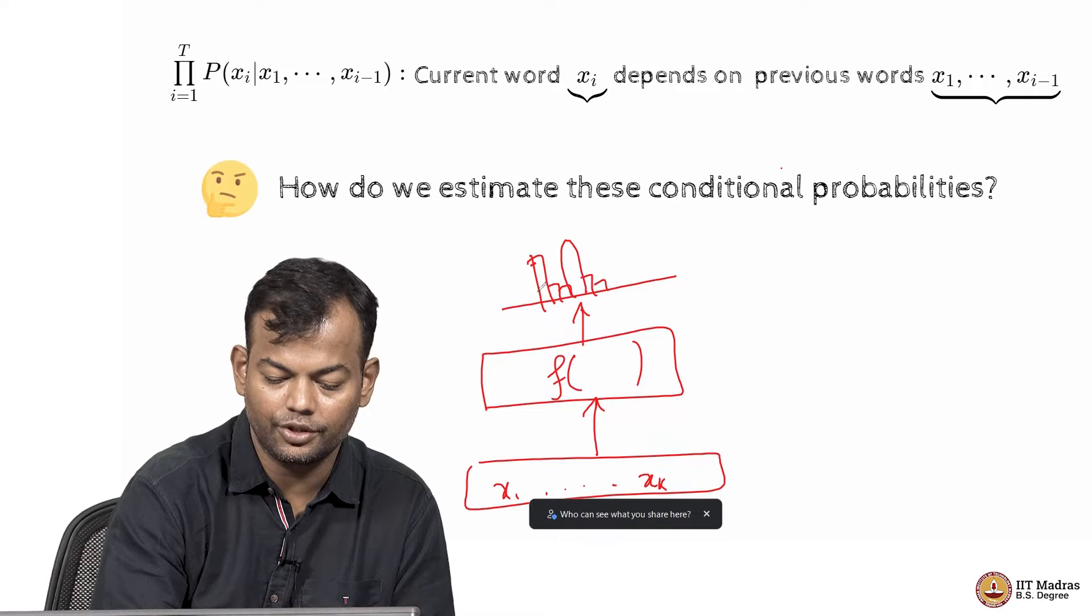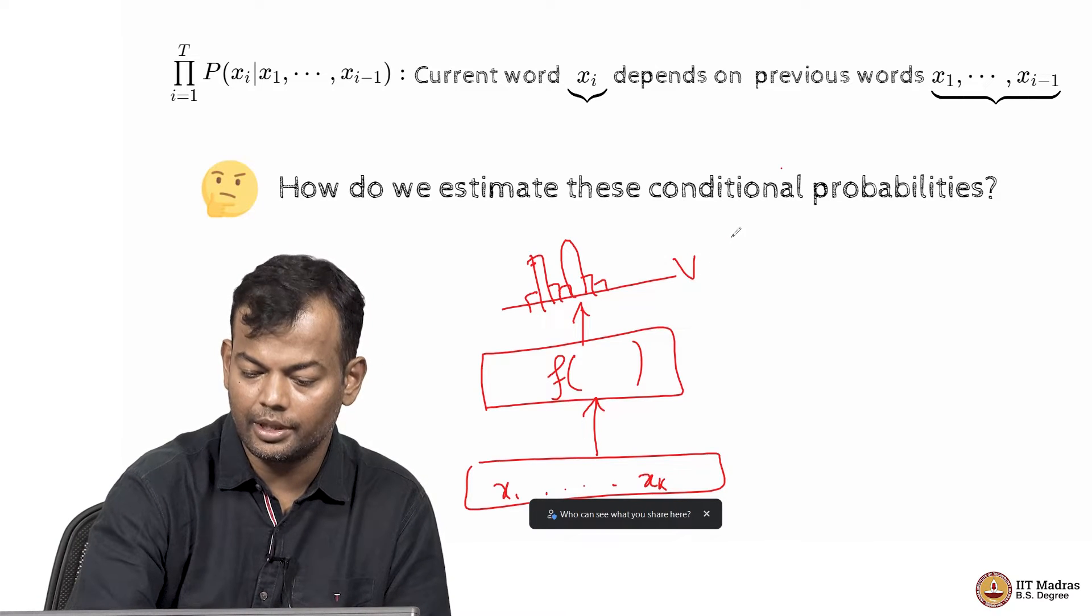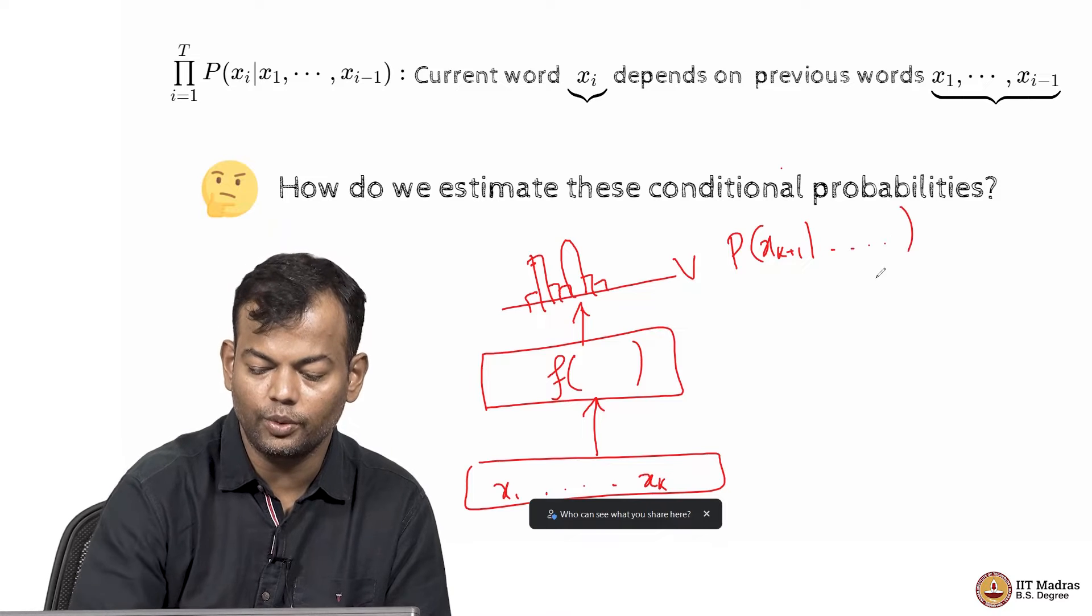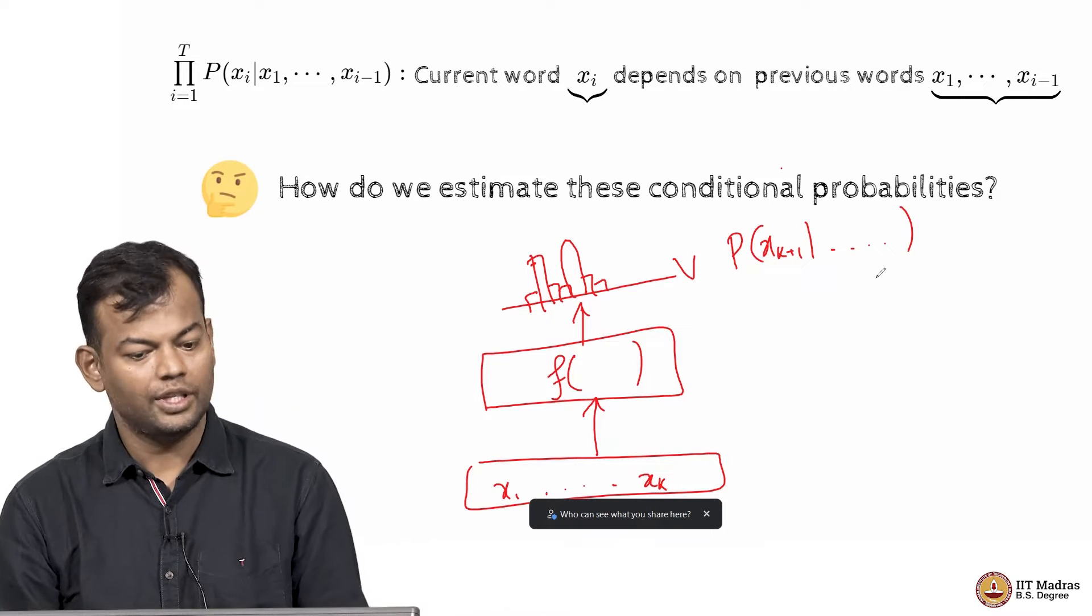It predicts a distribution over the vocabulary. So, this is p of xk plus 1 given x1 to xk. Is that okay? So, this is what I want to do.